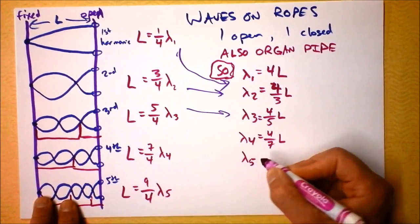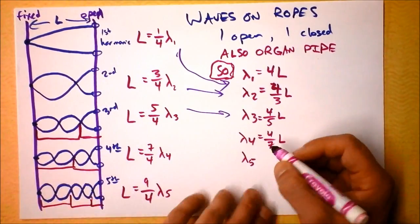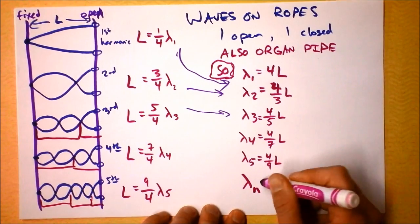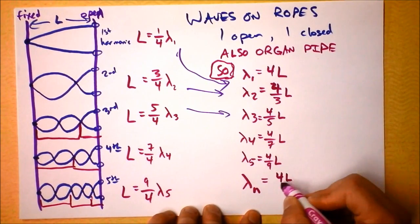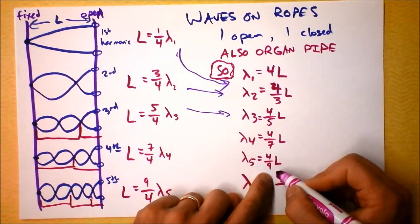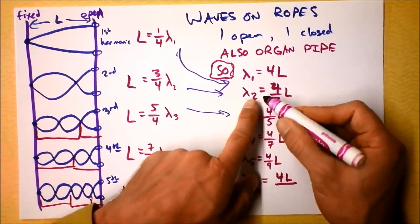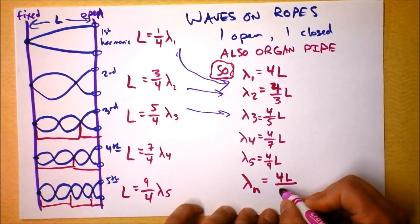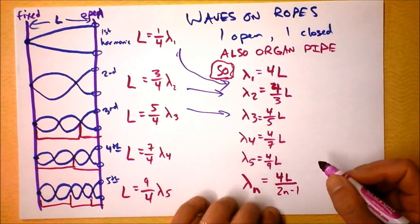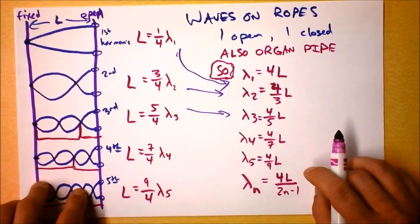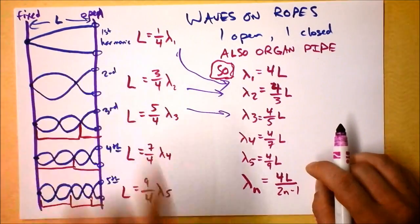Four ninths L for lambda five. Let's put a general here. Lambda sub N. Can we see this? It's four L divided by, now what am I doing to this N? Somehow I'm getting five goes to nine and four goes to seven and three goes to five and two goes to three and one goes to one. Well it looks like I'm taking two times N and then I'm subtracting one. That's kind of fancy. But that is what wavelengths fit in a particular rope of a certain length if one end is fixed and the other end is open.